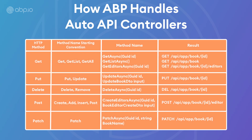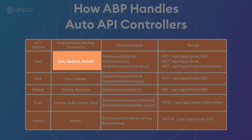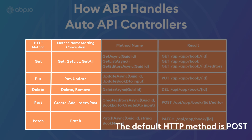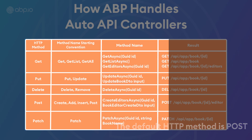If the method name starts with Get, GetList, or GetAll, ABP automatically treats it as an HTTP GET method. The same applies with Put and Update for PUT, Delete and Remove for DELETE, and Create, Add, Insert, or Post for POST, and Patch for PATCH. If none of these naming standards is followed, then the default request type is POST. The id parameters are defined as required parameters in the route.